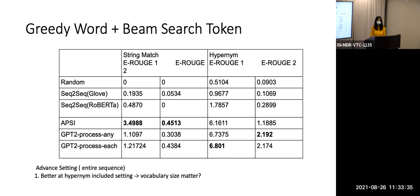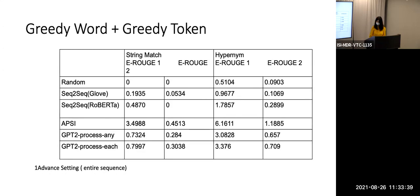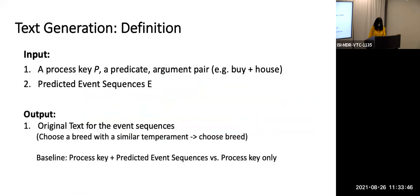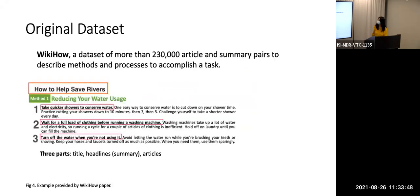Q: WikiHow is about 200,000 articles, right? But APSI is only 13,000? A: Yes, they filtered it. APSI did some filtering so that for each step there can only be one event, and after filtering it does not have much compared to the original WikiHow data.